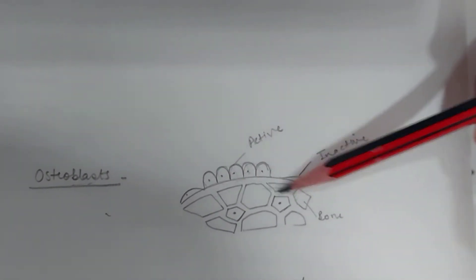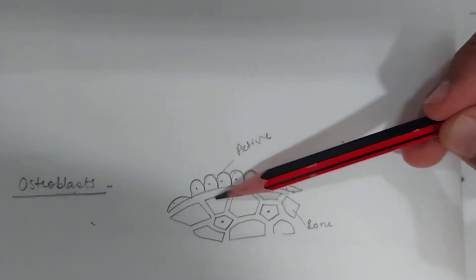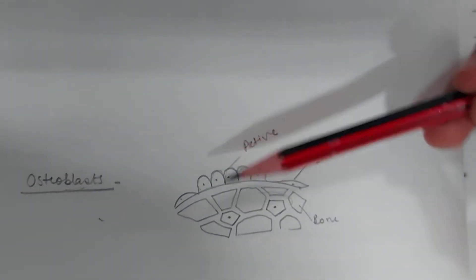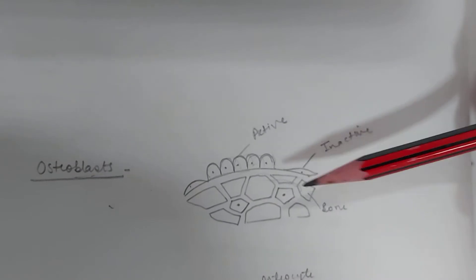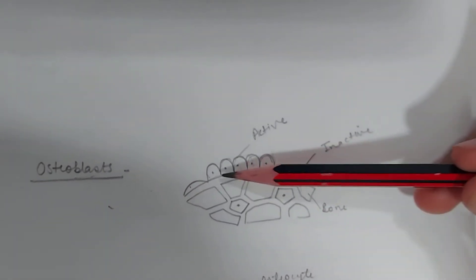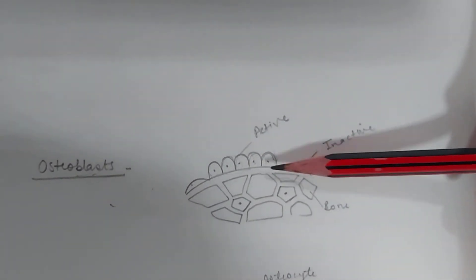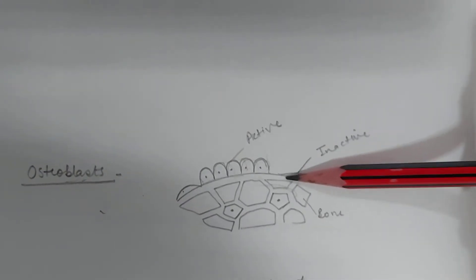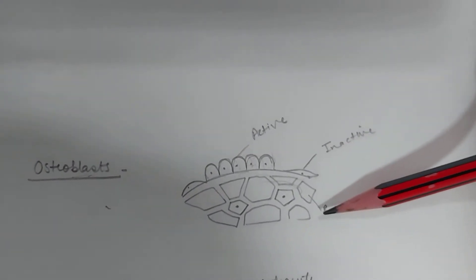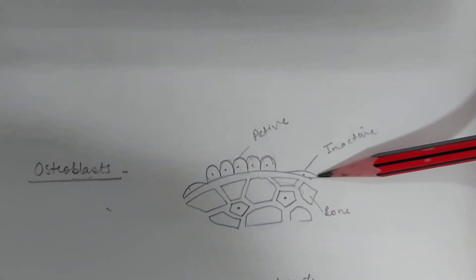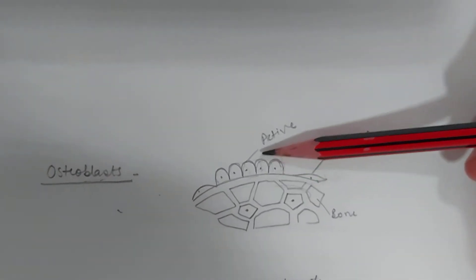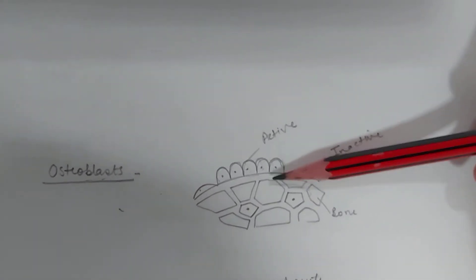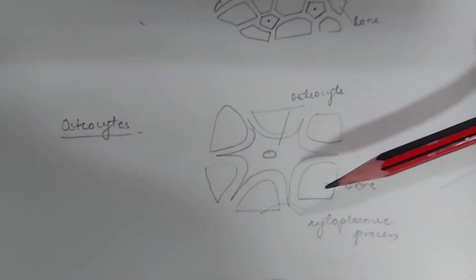Osteoblasts are located on the surface of bone tissue in such a way that it resembles an epithelium. When the osteoblast cells are actively engaged, they are cuboidal or columnar in shape. When they are inactive in forming the matrix, they become flattened and basophilia also decreases. In the active form, basophilic cytoplasm is seen.